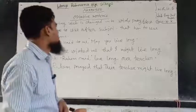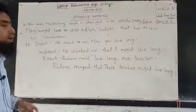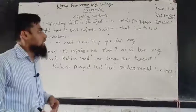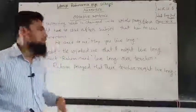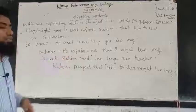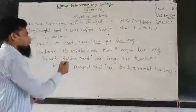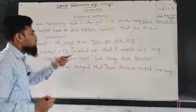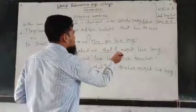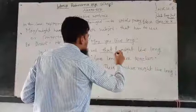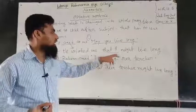Dear students, in optative sentence, the reporting verb 'said' is changed into 'wished', 'prayed', or 'blessed'. 'May' or 'might' has to be used after the subject, and 'that' is used as a connector. Example — Direct: He said to me, 'May you develop.' Indirect: He wished me that I might live long.